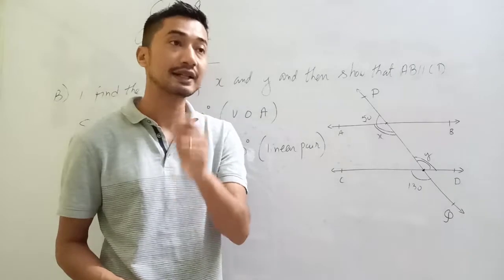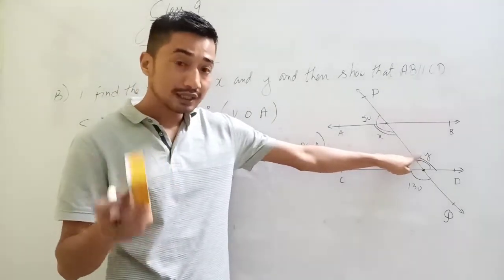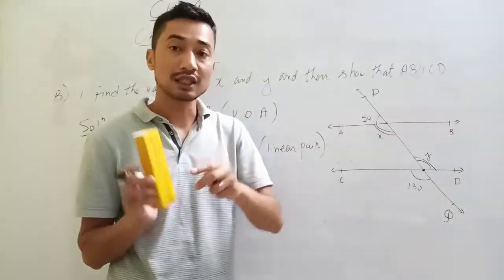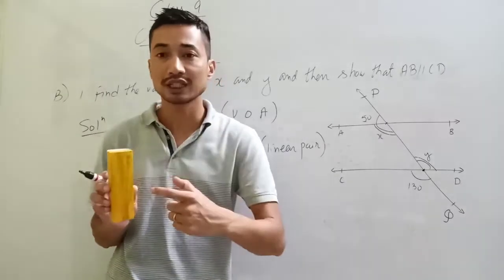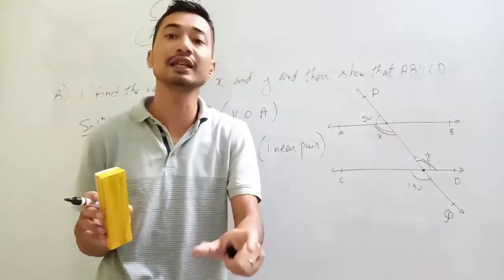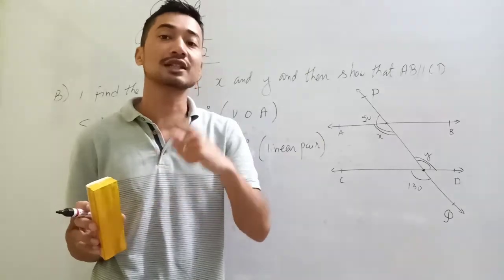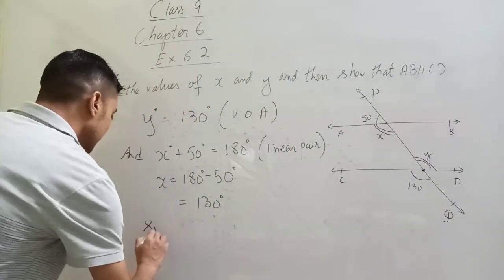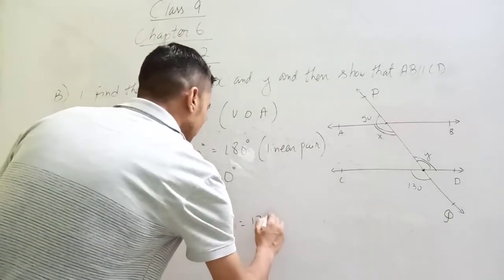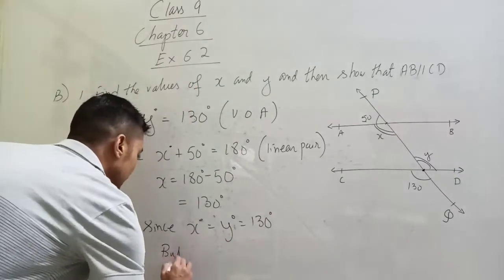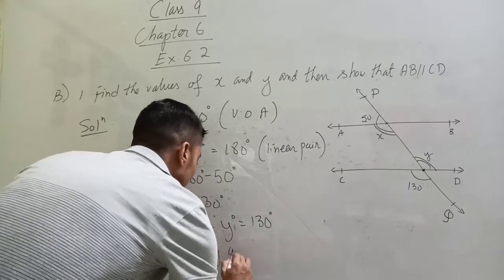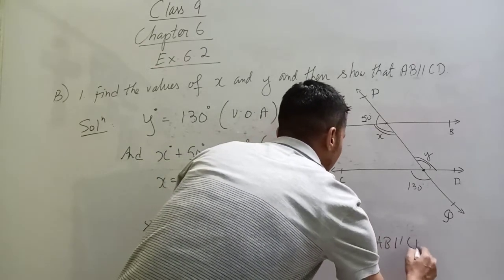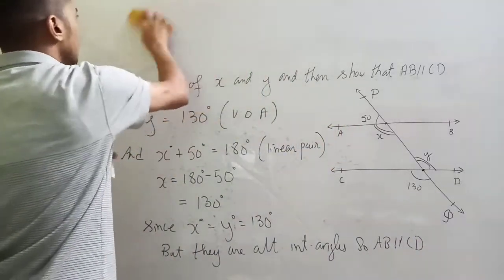The alternate interior angles are very important. The alternate interior angles being equal proves the lines are parallel. Since x and y are both 130 degrees, they are alternate interior angles, so AB is parallel to CD.